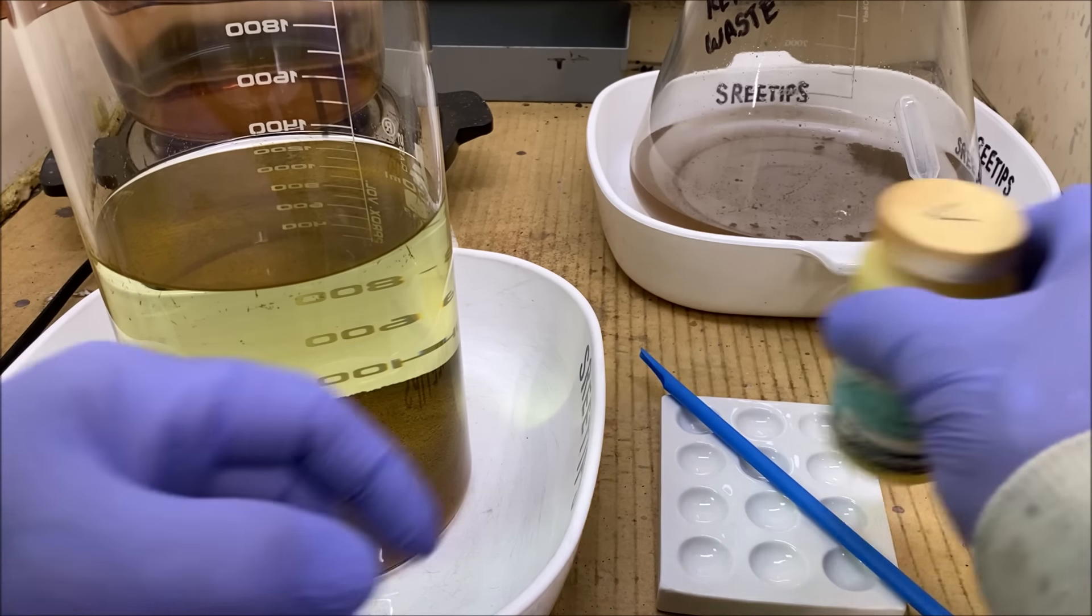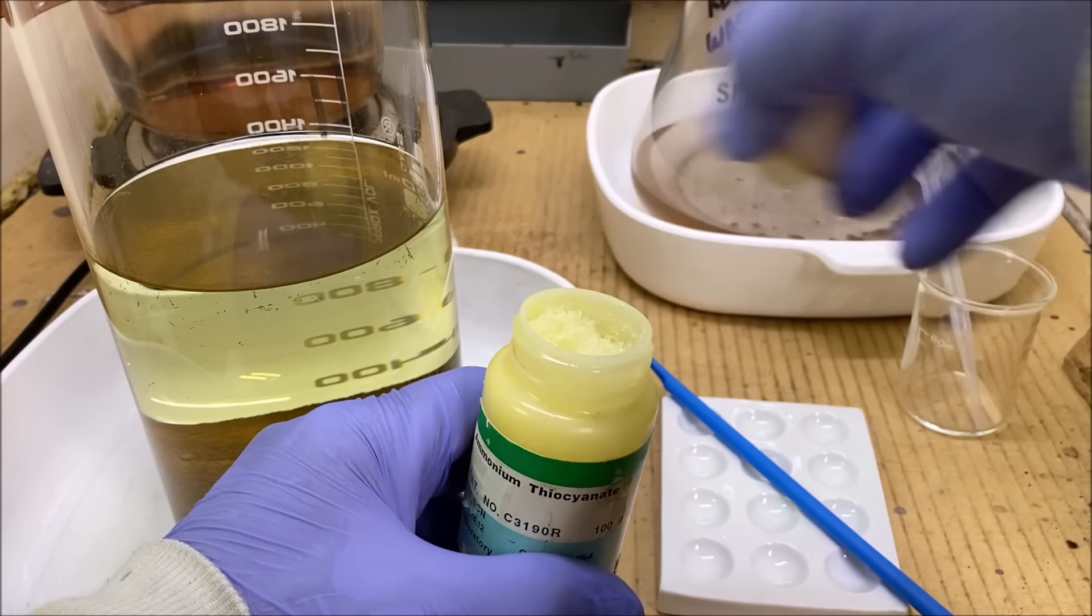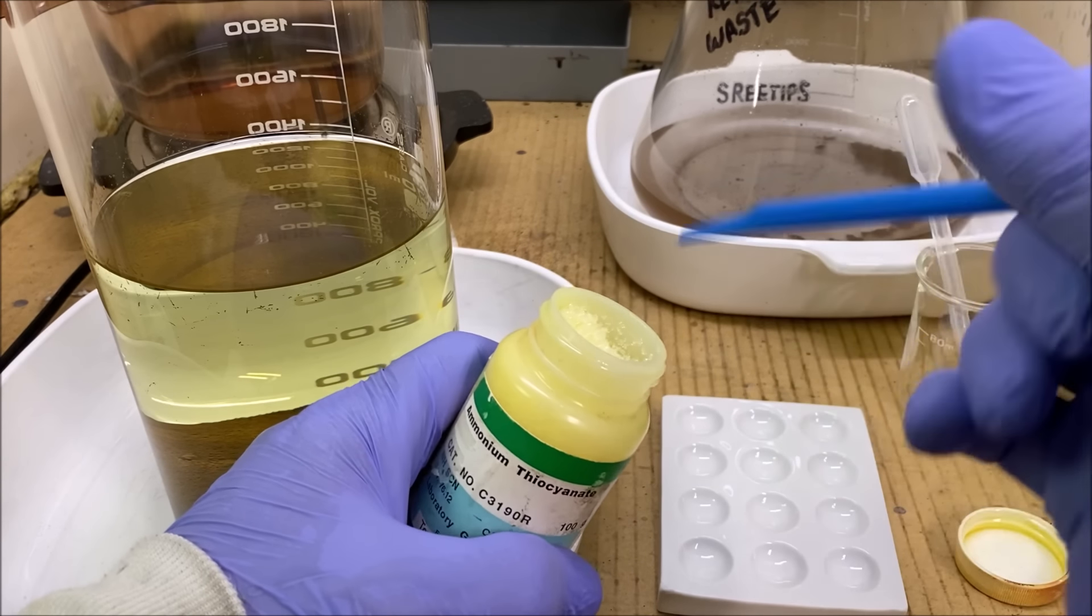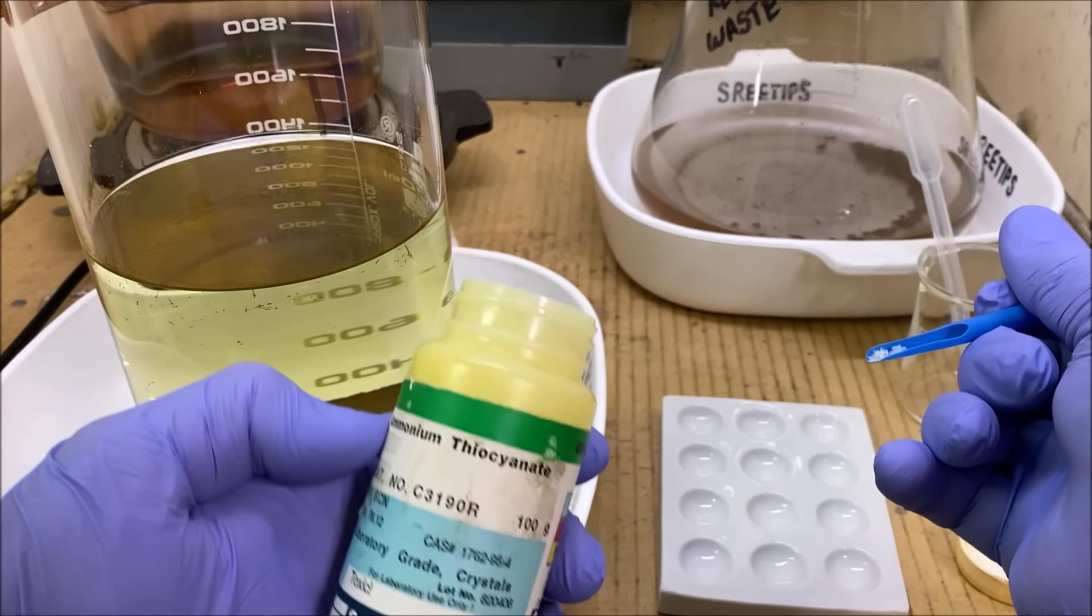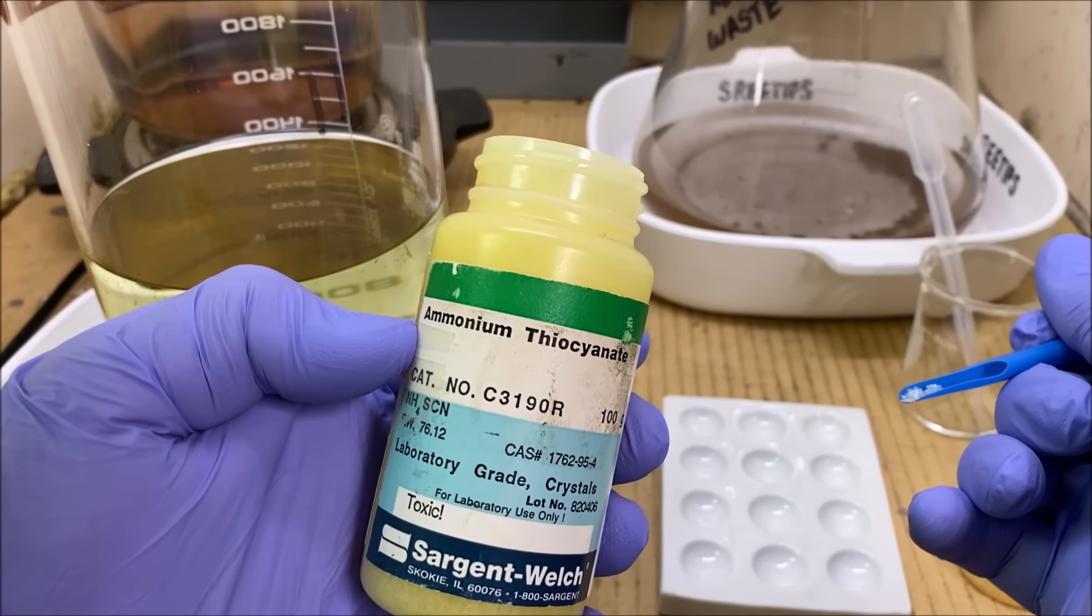Welcome back to part two of the six troy ounce gold refining. What I've got here is some ammonium thiocyanate.